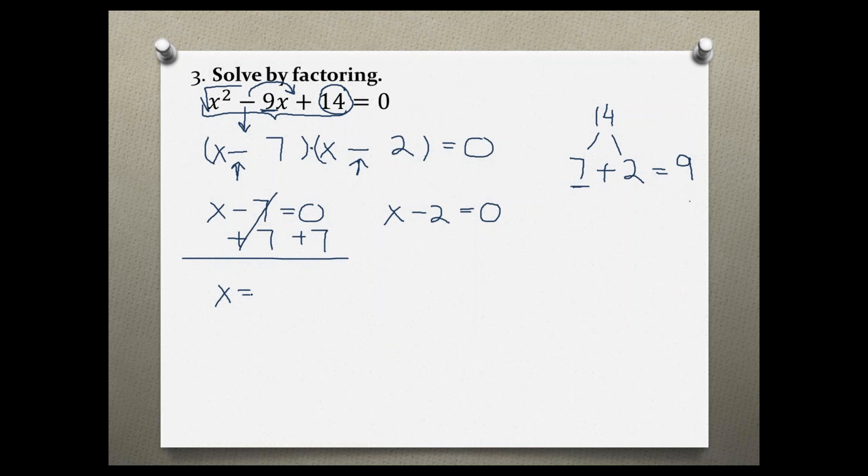On the other side, I'm going to add 2 to both sides and I get x equals 2. So my answer to this equation is x could equal 2 and x could equal 7. Both of these values would give me a true statement.